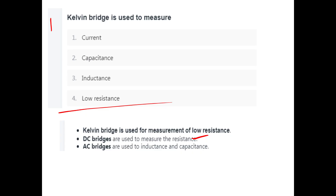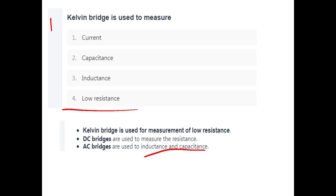We will ask questions. First question: Kelvin Bridges is used to measure — Current, Capacitance, or Inductance? Option D: Low Resistance. Kelvin Bridges is used for the measurement of Low Resistance. DC Bridges measure resistance. AC Bridges measure Inductance and Capacitance.